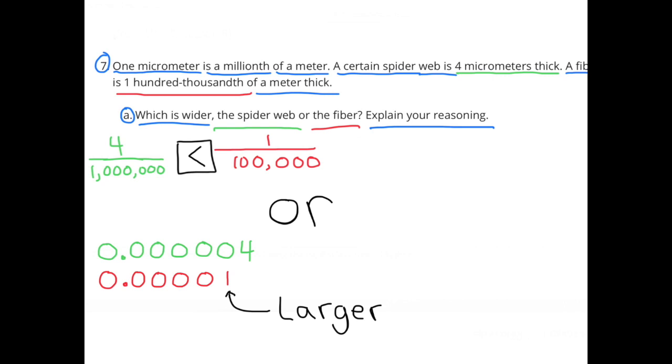Written in green is the spiderweb, 4 micrometers, which is the same as 4 millionths of a meter. Written in red is the fiber, 0.01 meters. One one-hundredth of a meter is greater than 4 millionths of a meter. The fiber is thicker than the spiderweb.